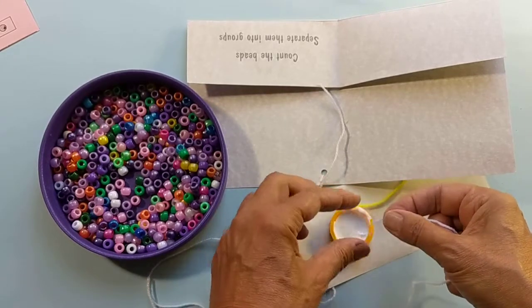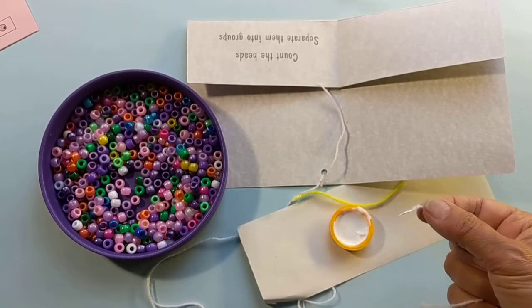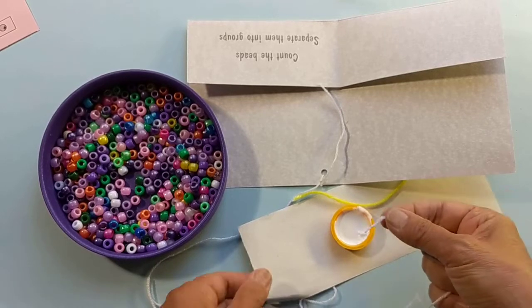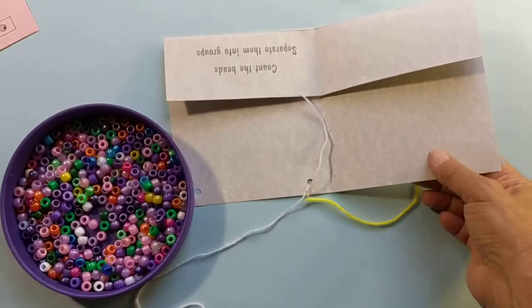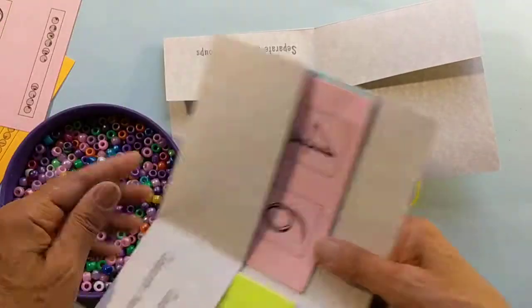The last option is to just take the yarn, dip it in a little bit of glue, smush it around with your fingers. It takes about a minute or so to dry, but it'll give you a hard tip.